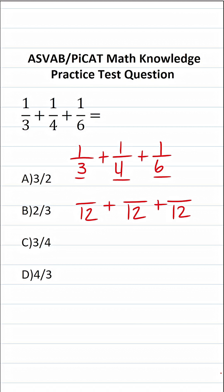So in other words, we're looking for a number that 3, 4, and 6 each go into. And as it happens, all three of these numbers go into 12. So 12 is going to be our common denominator.